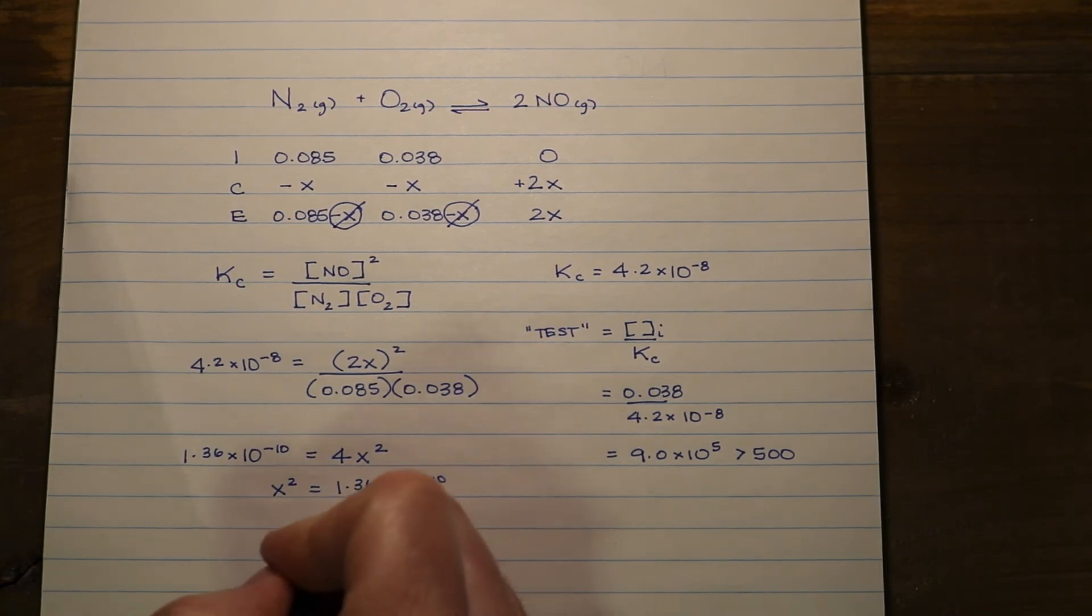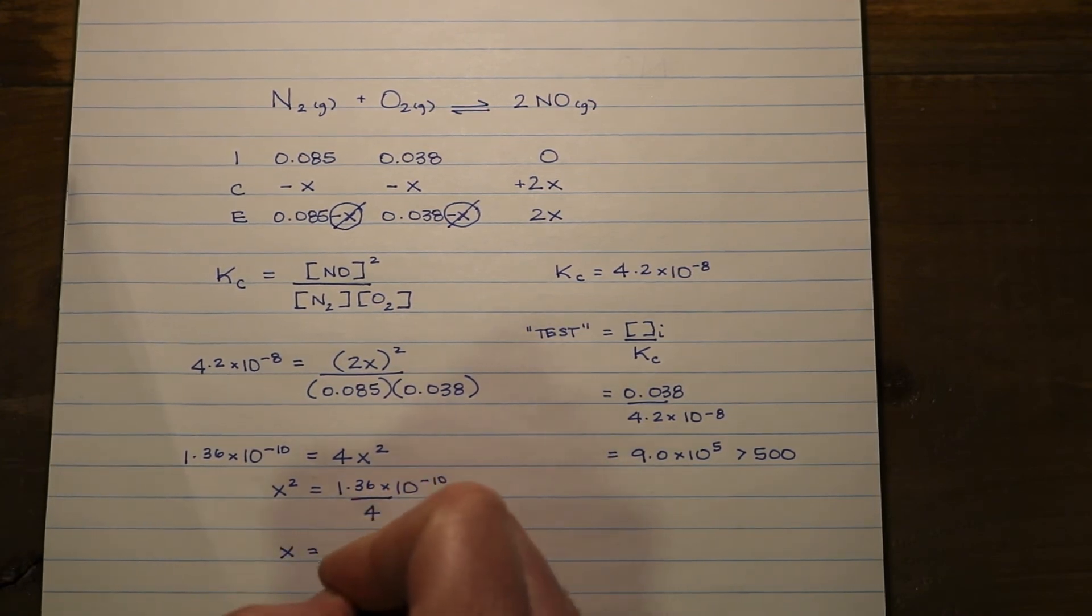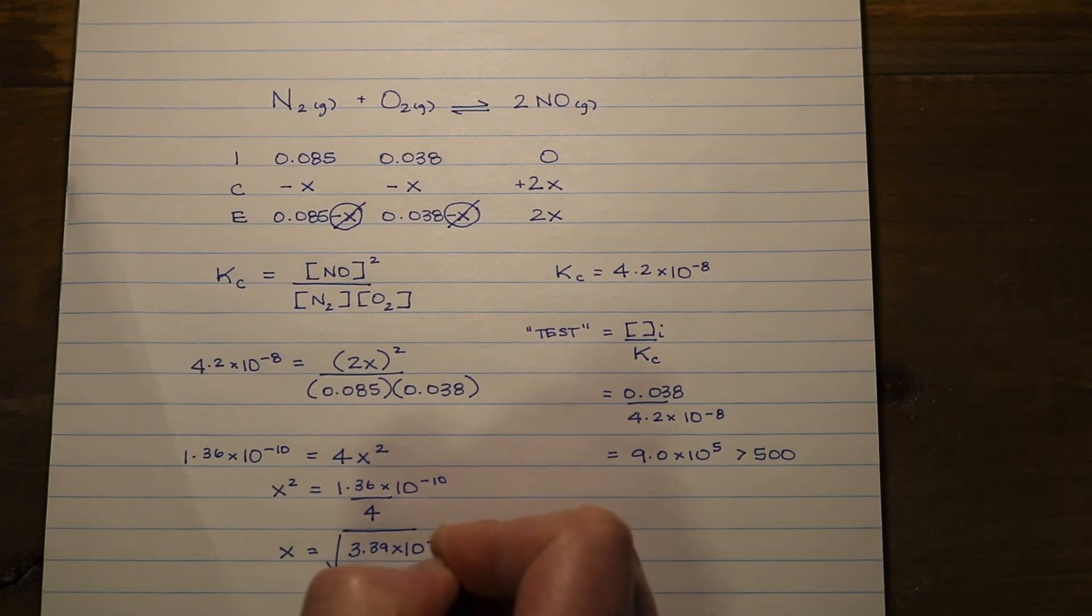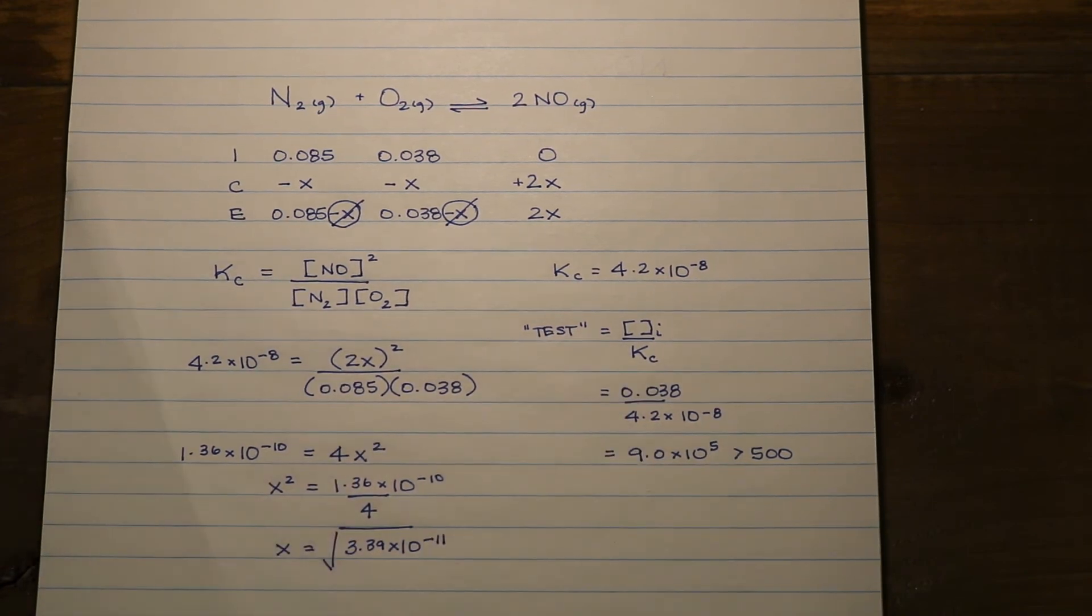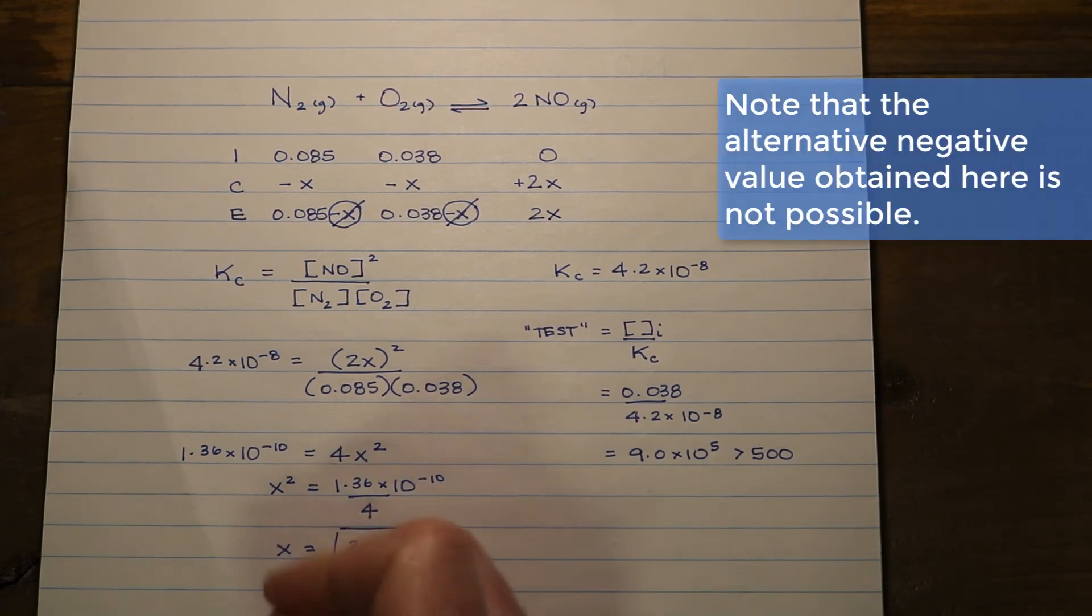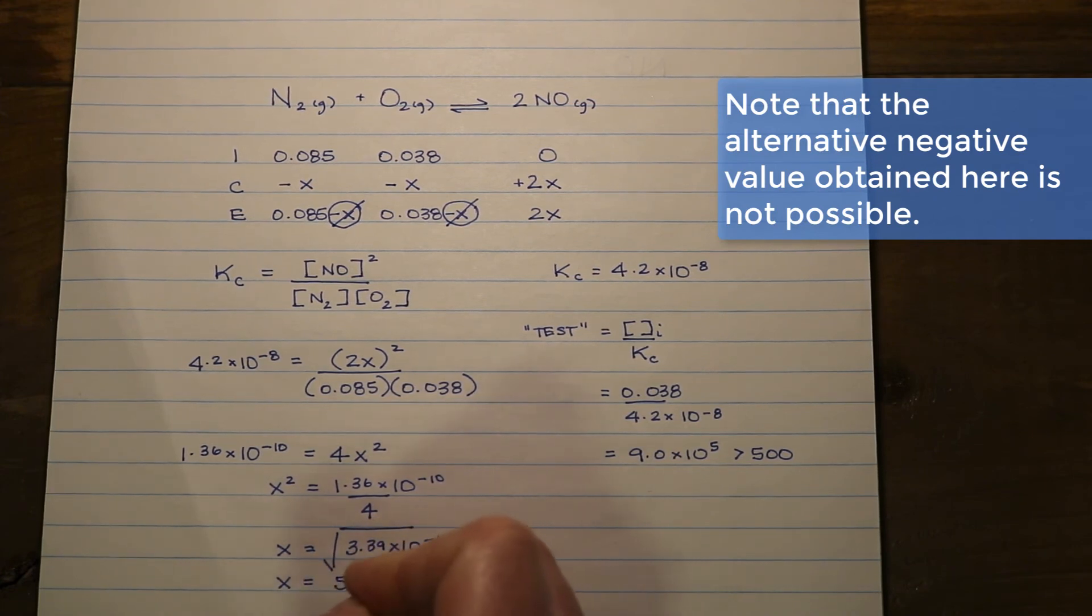To solve for X, I'm going to take the square root of both sides. That's going to leave me with X being equal to the square root of 3.39 times 10 to the negative 11, and I'm going to get a value for X of 5.82 times 10 to the negative 6.